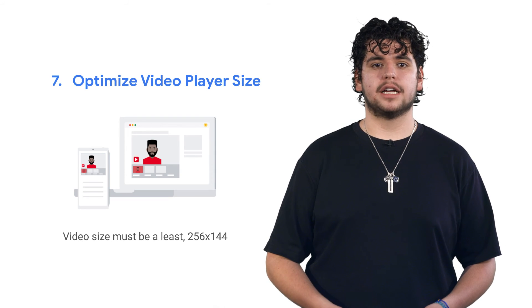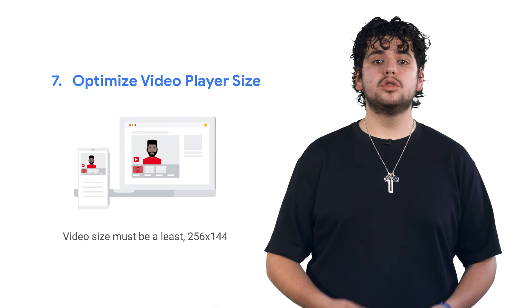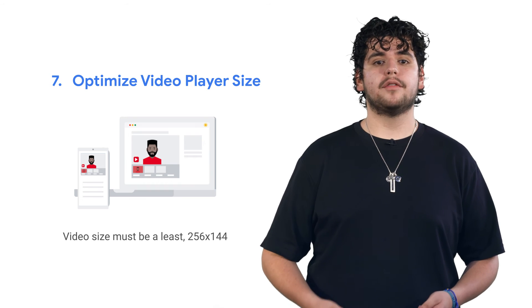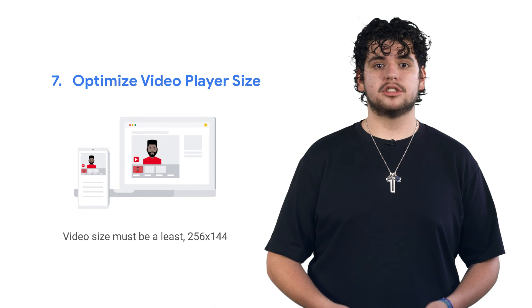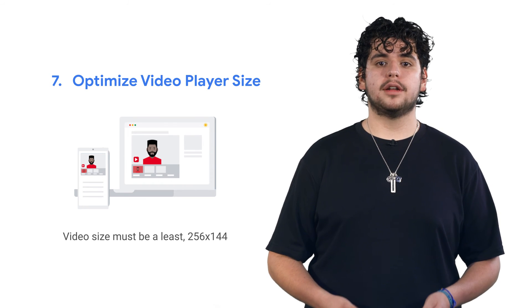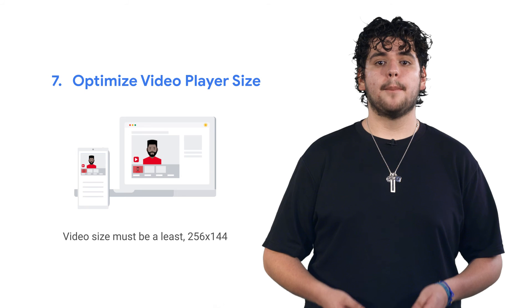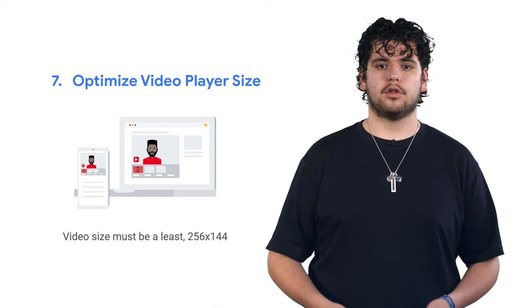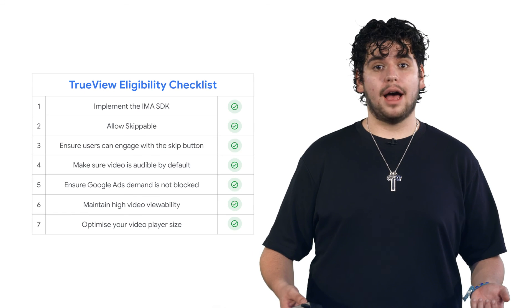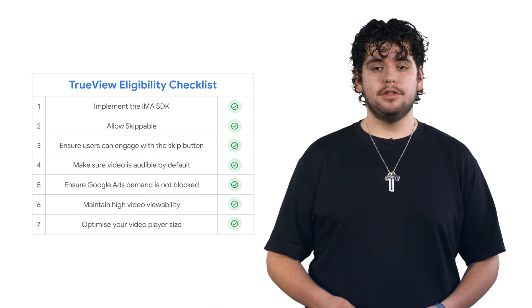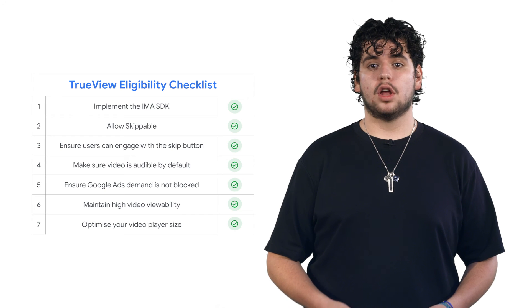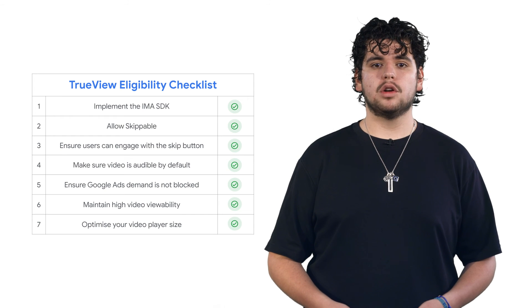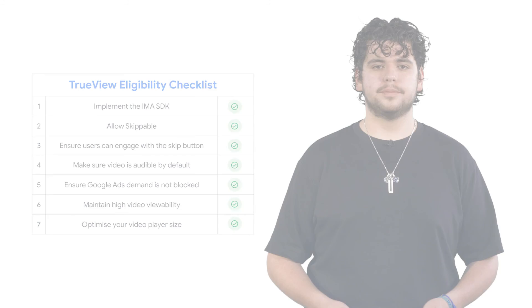Lastly, optimize your video player size. For TrueView eligibility, the majority of impressions should come from a player size of at least 256 by 144 pixels. And there you have it — if you follow these seven steps outlined on the checklist, your video inventory will become eligible for TrueView.